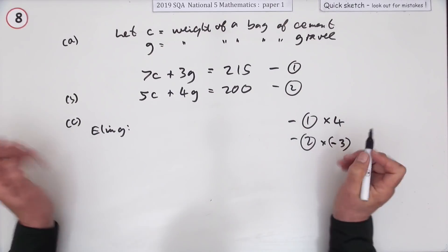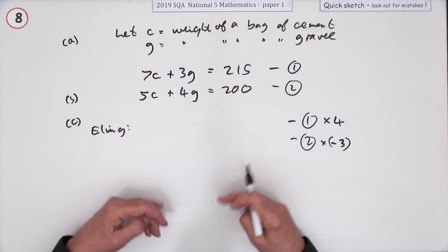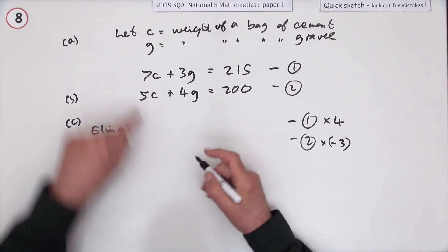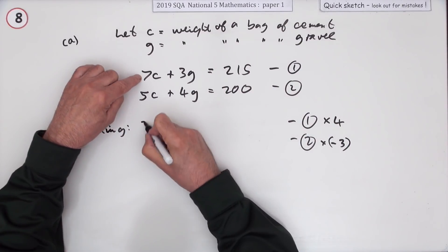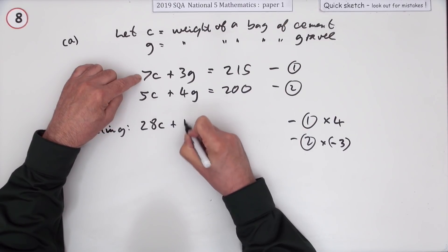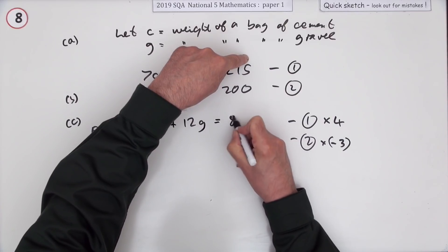The first one, four of everything - not just four of that, four of everything. That's 28C plus 12G, and what's four times that? That's going to be 860.